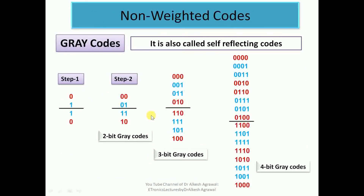Now let us understand the concept of non-weighted codes. One very standard example is gray code, also known as self-reflecting codes. These codes are not based on the weights of the bit position. To construct gray codes, in step 1 we write 0 and 1 and assume a mirror. The mirror of 1 is 1 and mirror of 0 is 0. In step 2, we place 0 as prefix above the mirror and 1 as prefix below the mirror, giving us the 2-bit gray codes: 00, 01, 11, 10.